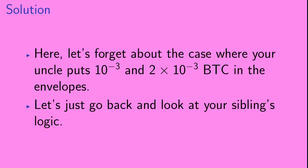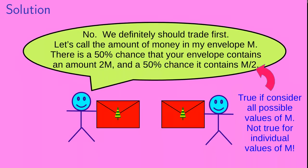Now for method 2. Let's forget about the specific case of 10⁻³ and 2×10⁻³ bitcoin and go back to look at your sibling's logic. What your sibling said was that the amount of money in their envelope is m, meaning there is a 50% chance your envelope contains 2m and a 50% chance it contains m/2. We pointed out that this is true if we consider all possible values of m, but it's not true for an individual value of m.